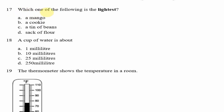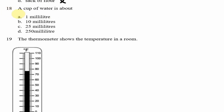Question 17: Which one of the following is the lightest — a mango, a cookie, a tin of beans, or a sack of flour? A mango is heavier than a cookie; a tin of beans has quite some weight; a sack of flour is definitely heavier than a cookie. So the most appropriate answer is option B — a cookie.